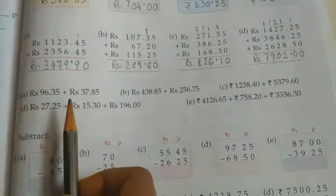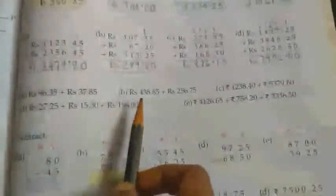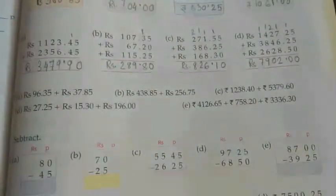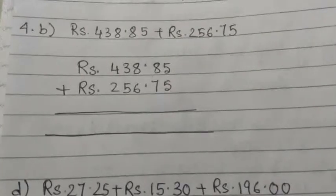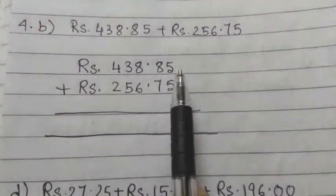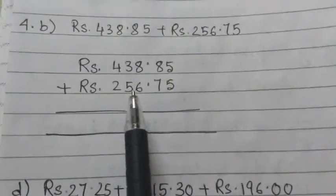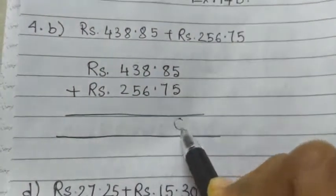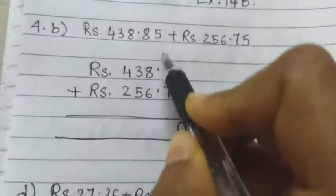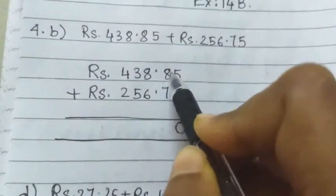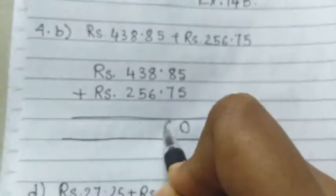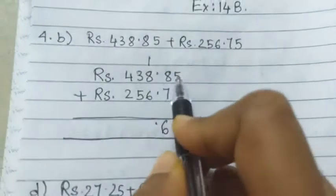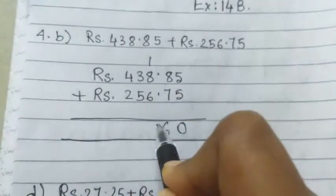Now number 4 sums we have to copy in our copy, then we have to solve. So number 4b: 438 rupees 85 paise plus 256 rupees 75 paise, you have to add together. Same way 5 plus 5 equals 0, carry 1. 1 plus 7 equals 8, 8 plus 8 equals 16, write 6 here, carry 1. You have to put the point because point has been given after 2 paise.